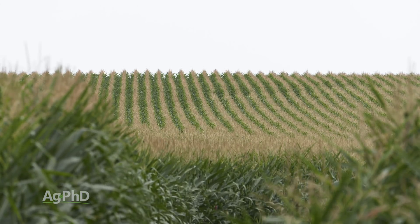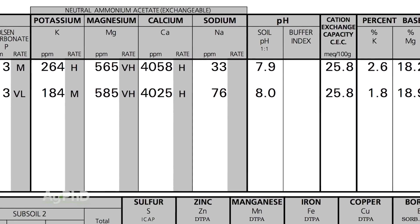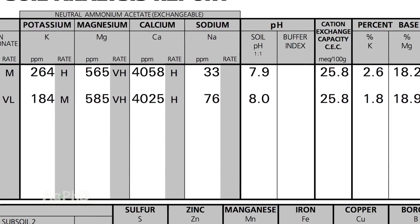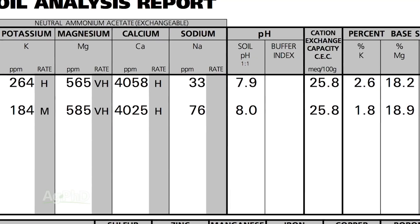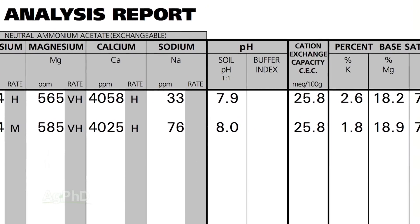If we're in a high pH situation — let's say a pH of 8 — that's really high. That's 10 times more alkaline compared to a neutral pH of 7. We'd really rather be in the mid-6s. So we've got a problem: we're going to have some issues trying to get phosphorus into our roots.